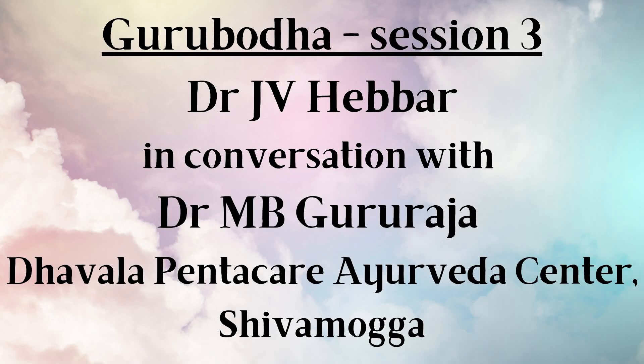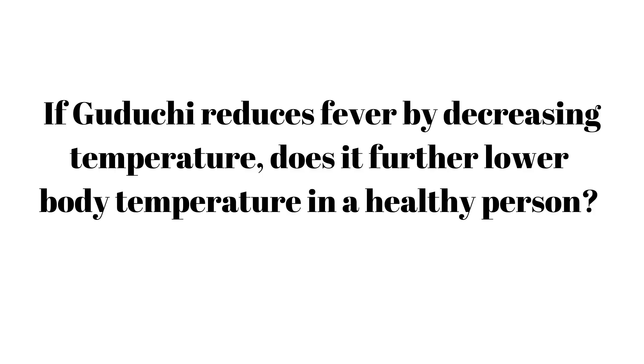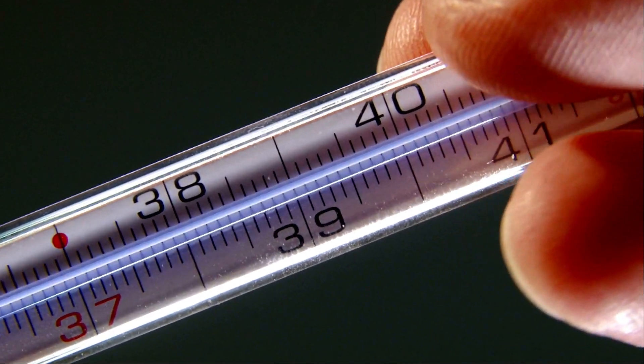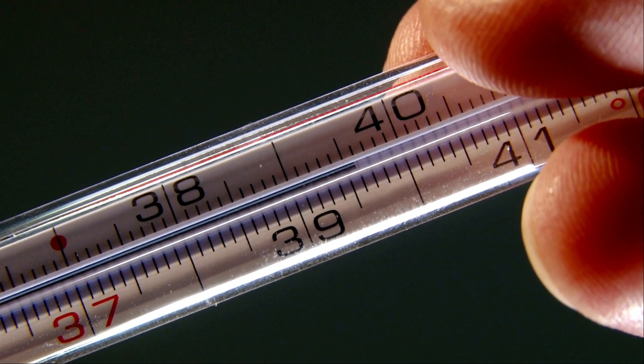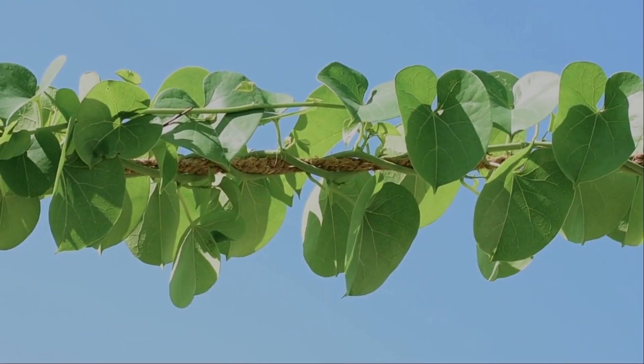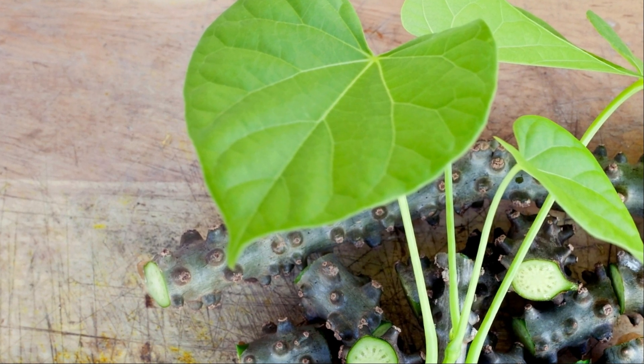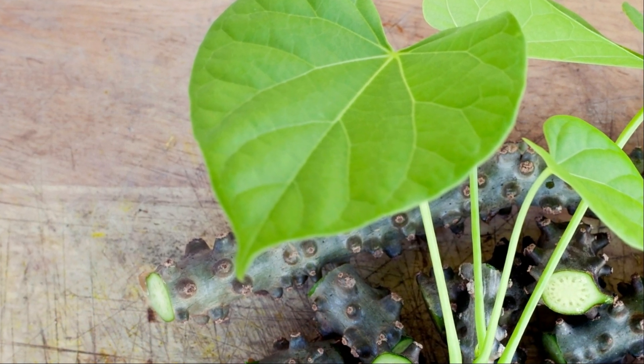Samprapati or atiopathogenesis is the basis here. If a particular atiopathogenesis favoring a fever condition is present, then Guduchi has a potential of reducing body temperature, but only in a condition where it is increased above normalcy. It works in that context, and as long as the samprapati is not broken, Guduchi will continue to play its antipyretic role. Once the temperature reaches normalcy and there is no atiopathogenesis of jwara or fever-like condition, Guduchi's antipyretic action stops.